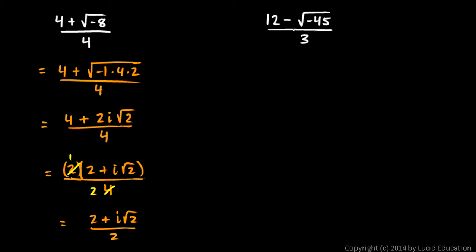Okay, this one over here, 12 minus the square root of negative 45 over 3. Well there's a negative there, so we're going to have an i in it.